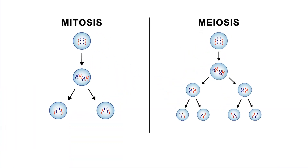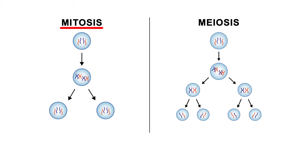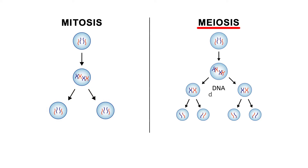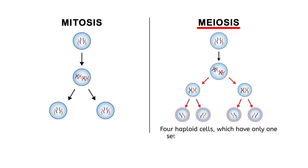The second major difference is the number of times that the DNA divides. Both mitosis and meiosis synthesize, or create an extra copy, of the cell's DNA. However, while in mitosis the DNA divides once to create two cells with full sets of chromosomes, in meiosis the DNA divides twice. This results in four haploid cells, which are cells with only one set of chromosomes instead of two — you can think of haploid as meaning half the normal number of chromosomes.